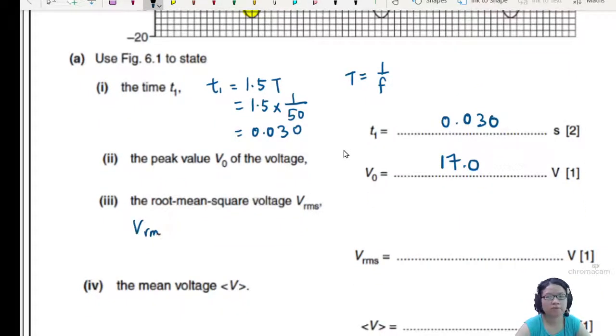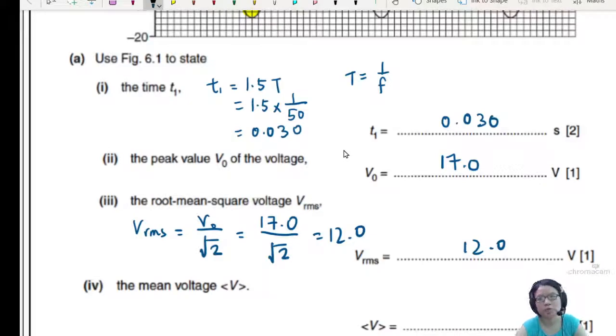Root mean square. V easy. V naught over root 2. So V naught. This O here is naught, V naught is 17 divided by root 2, which will give us 12.0. Okay. Once again, 2 to 3SF.